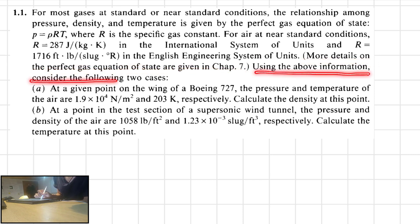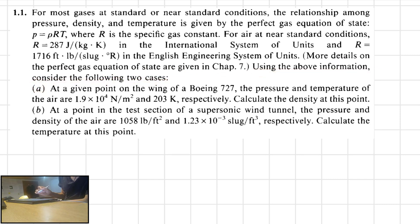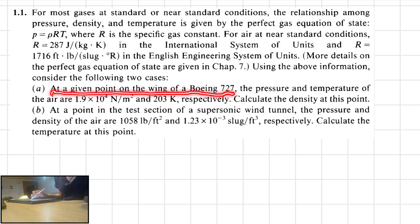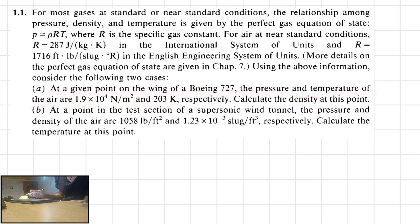Using the above information, consider the following two cases. We are going to read part A, solve it, and then read part B and solve it. Part A: at a given point on the wing of a Boeing 727, the pressure and temperature of the air are 1.9 times 10 to the 4th power Newtons per square meter and 203 Kelvin, respectively. Calculate the density at this point.